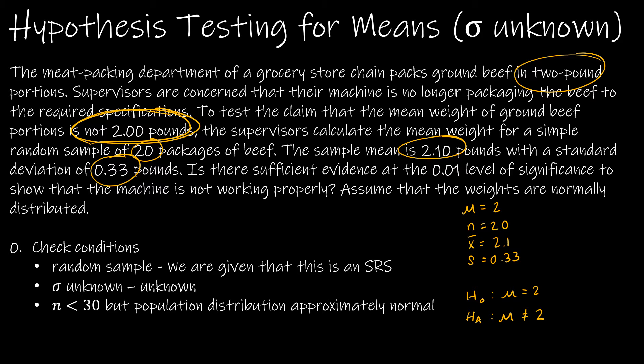Is there sufficient evidence at the 0.01 level of significance to show the machine is not working properly? Assume that the weights are normally distributed.